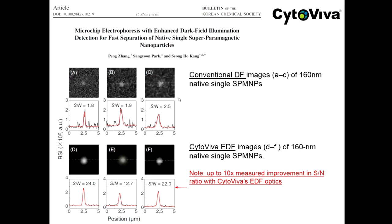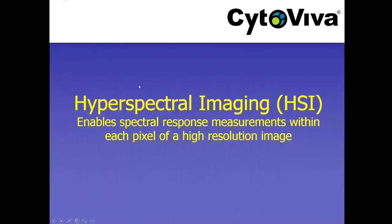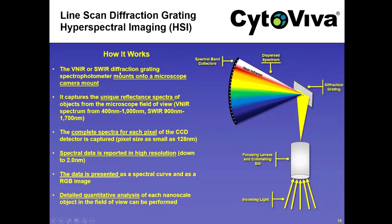That Korean research group took quantitative measurements comparing an identical particle using standard dark field versus CytoViva enhanced dark field. They were able to quantitatively measure about a 10x increase in signal-to-noise ratio versus off-the-shelf dark field optics from Olympus, Nikon, or Zeiss. This third-party validation demonstrates how well these enhanced dark field optics work compared to standard dark field optics.